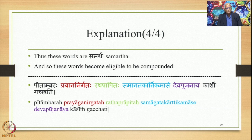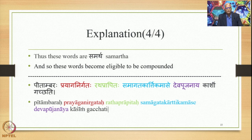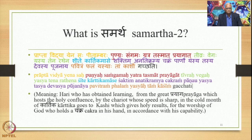Kashim Gachati. So Prayagat Nirgataha, in which Prayagat is related to the action of going denoted by the verbal root Gama with the preverb Nir, shows that they are interrelated words. Similarly Ratha-Prapitaha: Ratha and Prapita are interrelated, and so also are Samagata and Kartikamasa, and Deva-Poojana. Now if we expand the same sentence further for understanding what is Samartha — this is the second answer or second explanation.